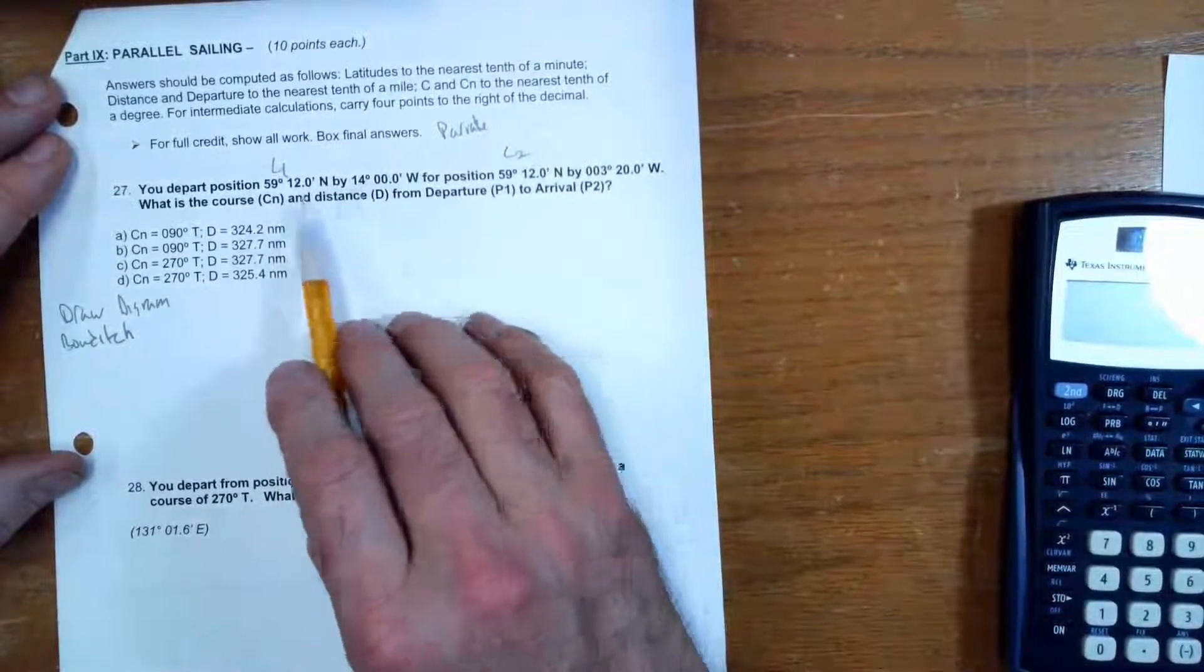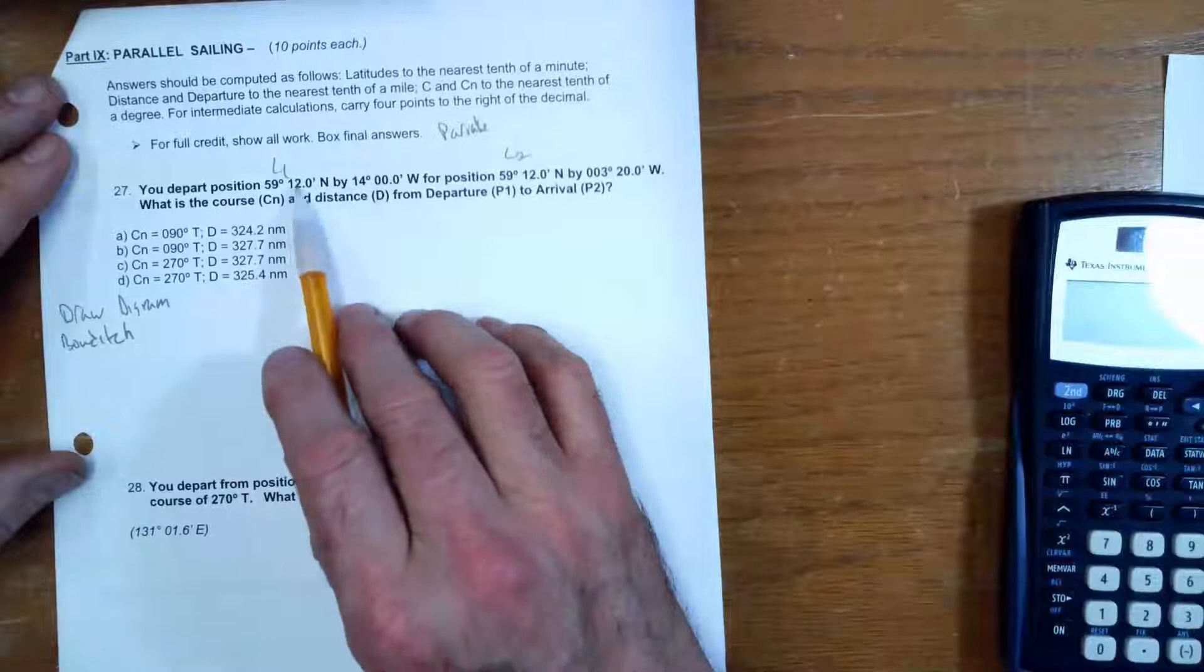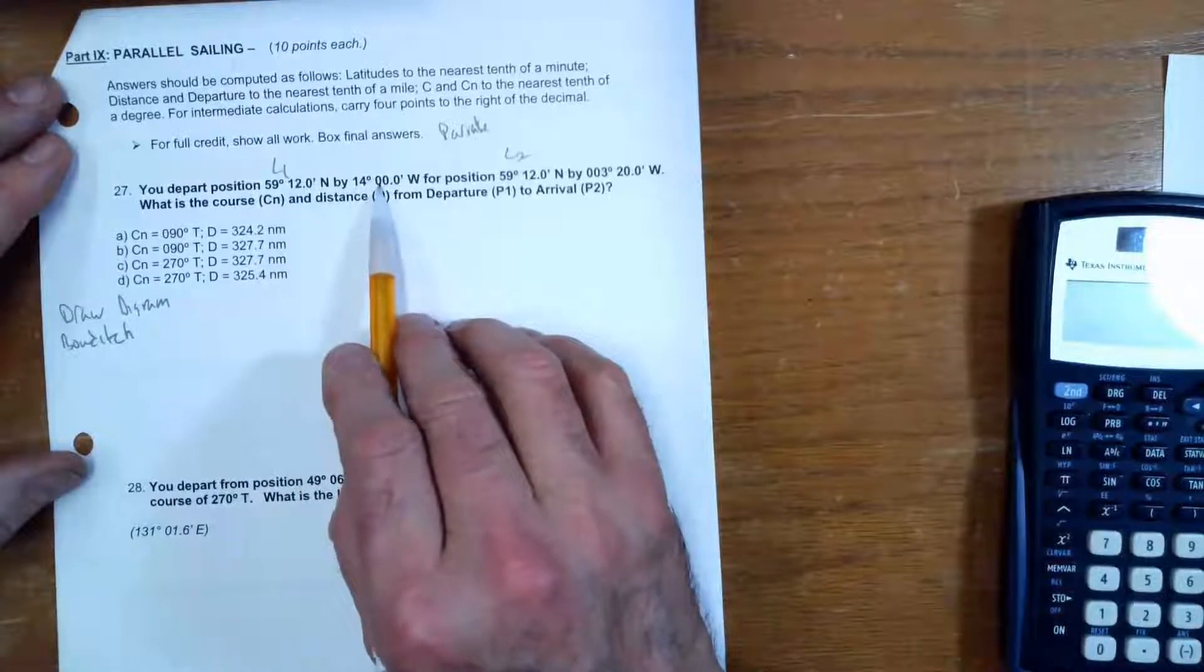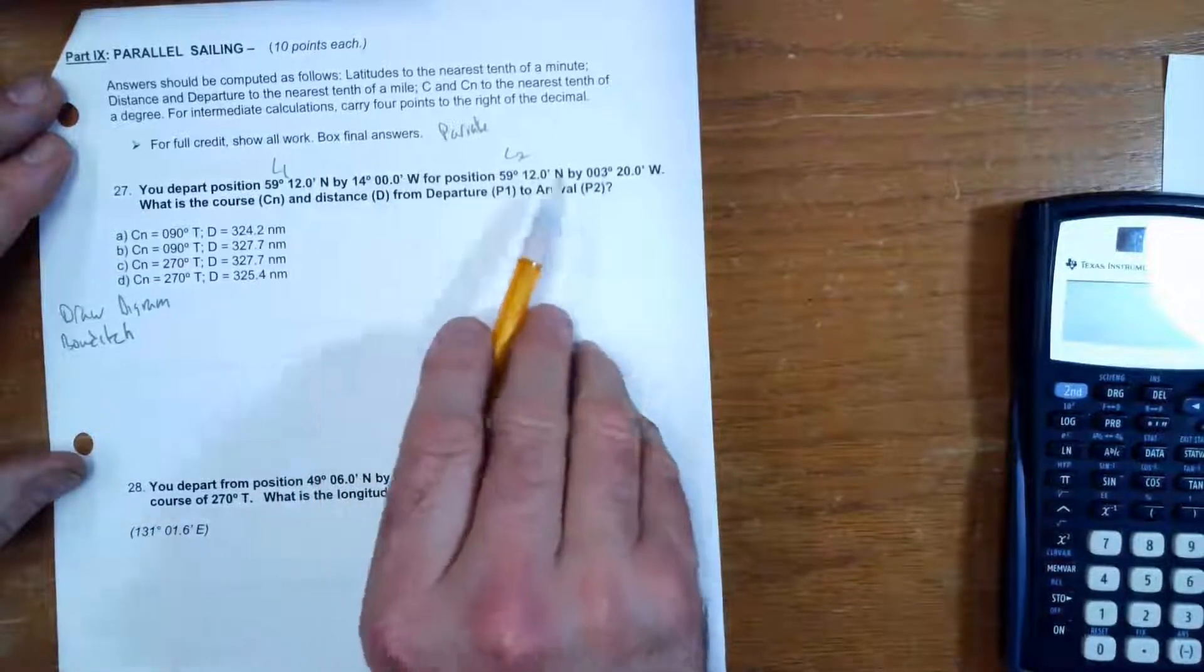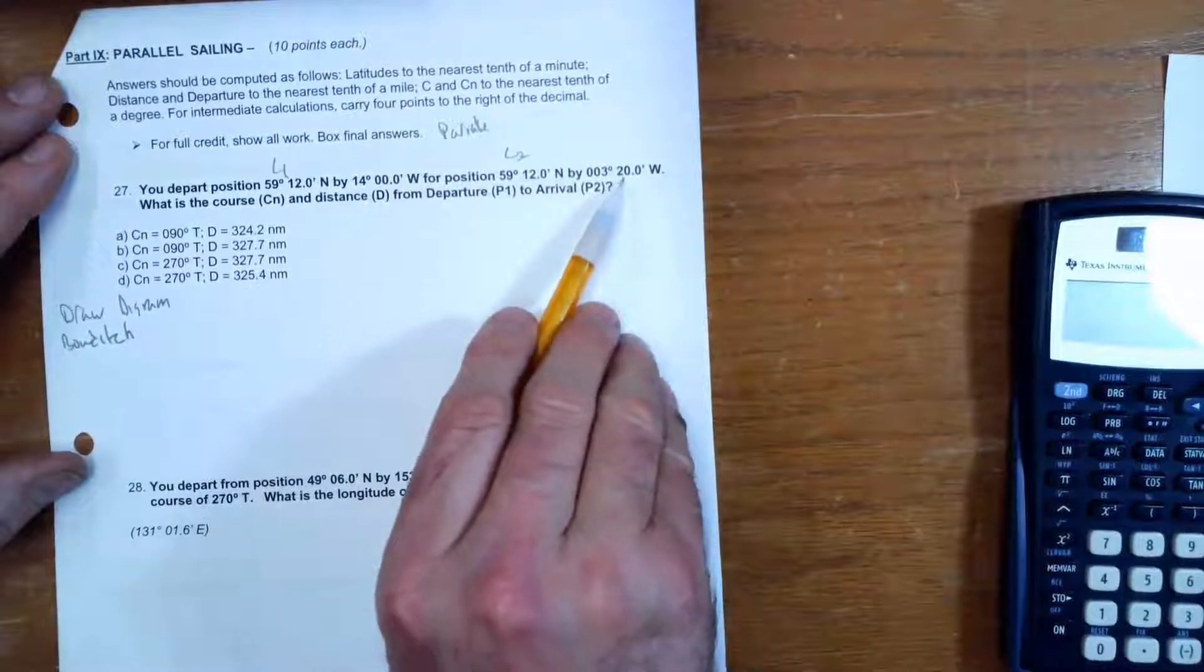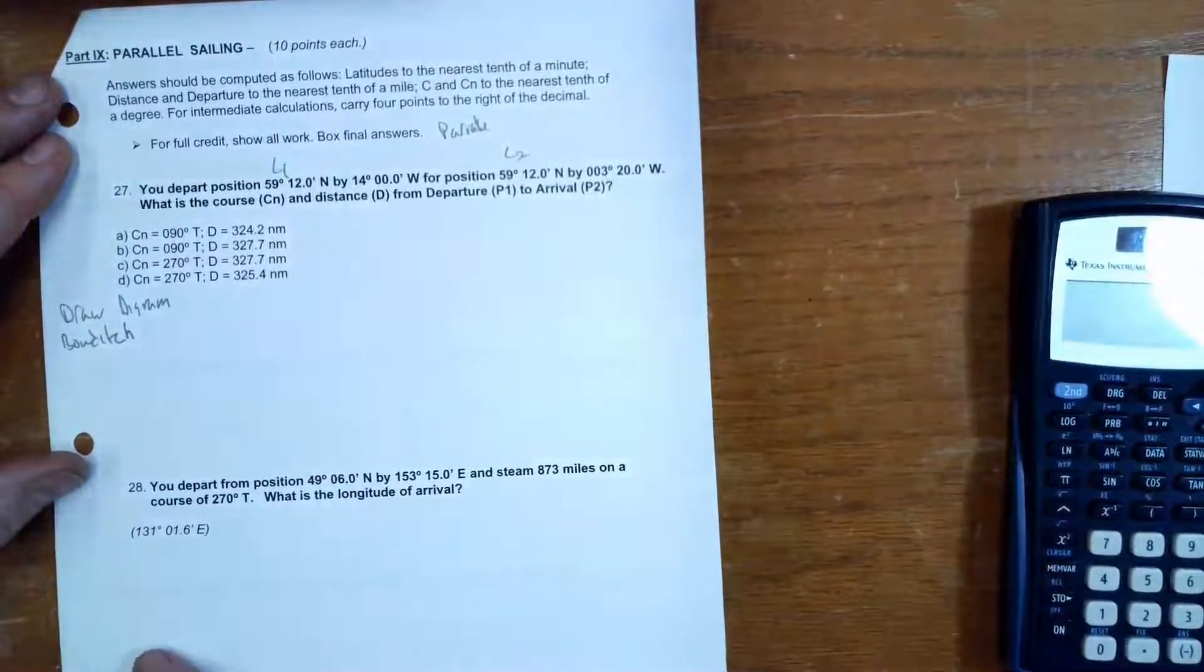They're asking us to find the course and the distance. To find the course, you might be able to see that this is actually east because my longitude was 14° west, now it's 3° west, so it's getting smaller. But I'm going to show you how you can draw a picture for that.